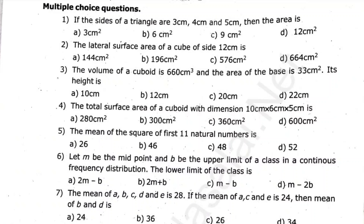If the sides are 3, 4, 5 and 5, then the area is 0. The lateral surface area of a cube is 10. The value of a cube is 60 centimeters cube. And the area of a base is 33 centimeters square. Its height is dash.